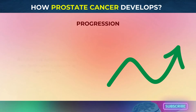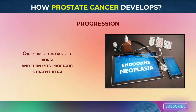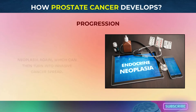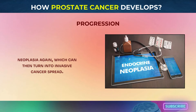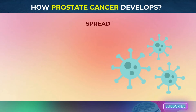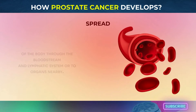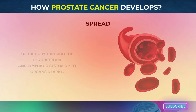Progression: at first, the abnormal cells may only form a growth in the prostate. Over time, this can get worse and turn into prostatic intraepithelial neoplasia, PIN, which can then turn into invasive cancer. If prostate cancer isn't found early, it can metastasize, or spread, to other parts of the body through the bloodstream and lymphatic system or to organs nearby.